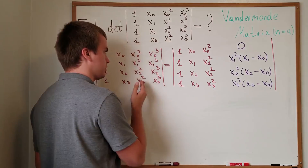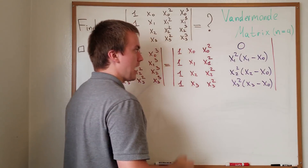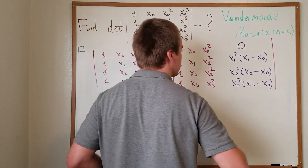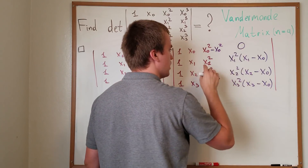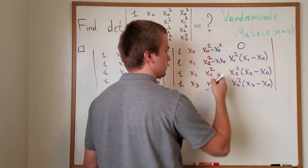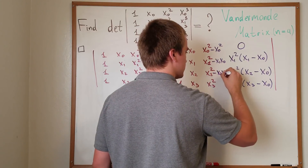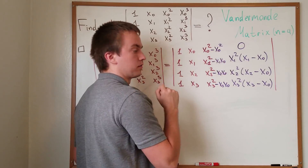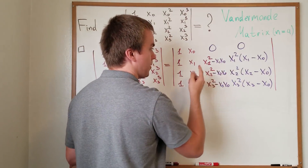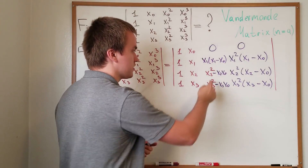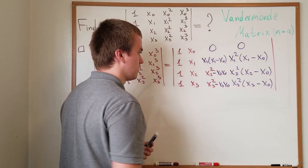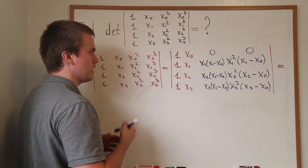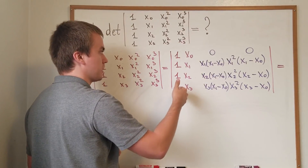After multiplying the fourth column by negative x₀ and adding to it, we got that new column. Now let's repeat the same process: take the second column, multiply by negative x₀, and add to the third column. For the first entry we get negative x₀² — wait, for this one we get x₁ times negative x₀, then negative x₂ · x₀, and negative x₃ · x₀. Again the first term becomes zero, and we can factor x₁, x₂, and x₃ from the remaining terms respectively.